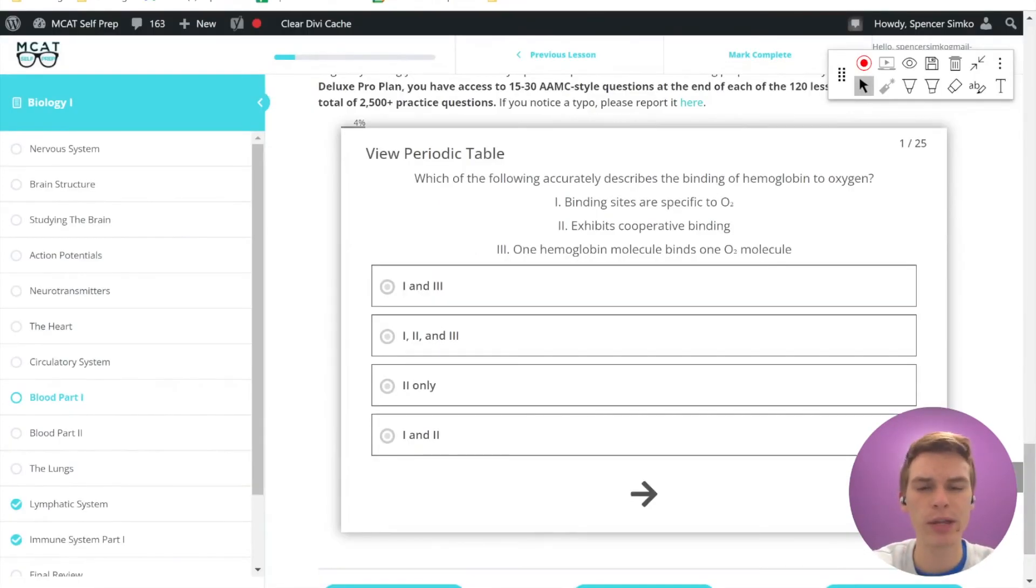So coming back to our answer choices here, let's decide which of these is true about oxygen and hemoglobin. Number one is that binding sites are specific to oxygen. Well, oxygen can bind there, but that's not the only thing that can bind there, so this is not correct. Number two says that it exhibits cooperative binding. That's exactly what happens here, as we saw with that binding curve and it being curved instead of being straight. So this is true. Hemoglobin exhibits cooperative binding to oxygen.